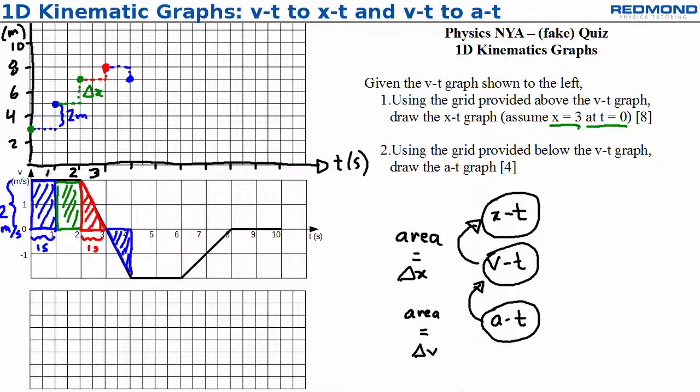When you get the hang of it, you can take a bigger area. Going from 4 to 6 seconds gives a base of 2 seconds and a height of negative 2 meters per second for an area of negative 4 meters. Adding negative 4 meters to 7 meters gives X equals 3 meters at 6 seconds.